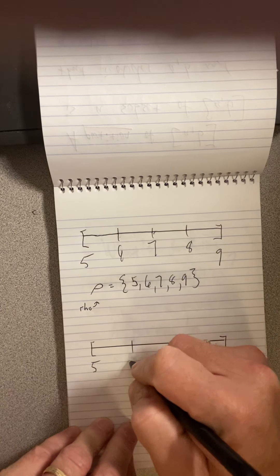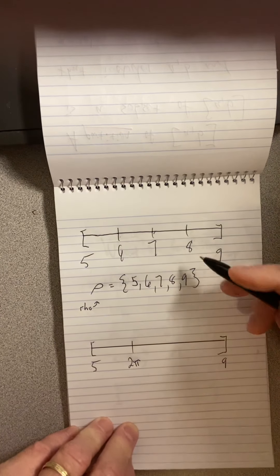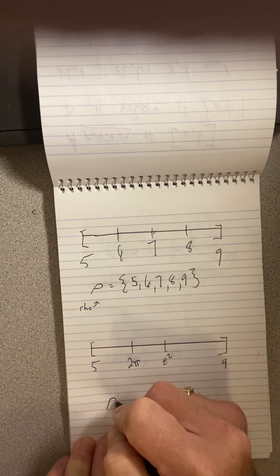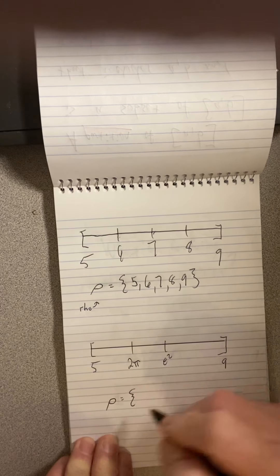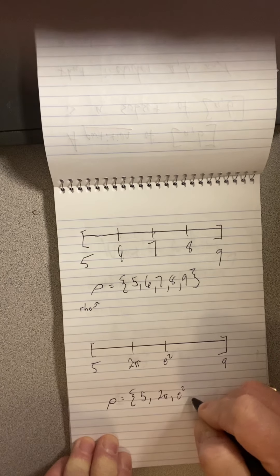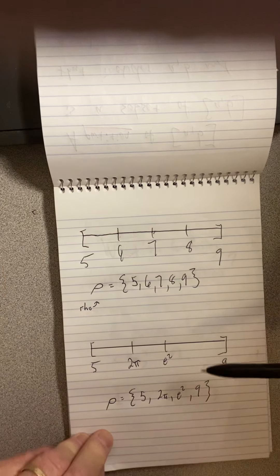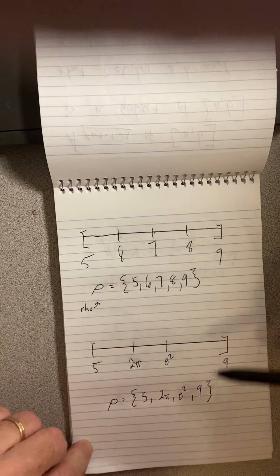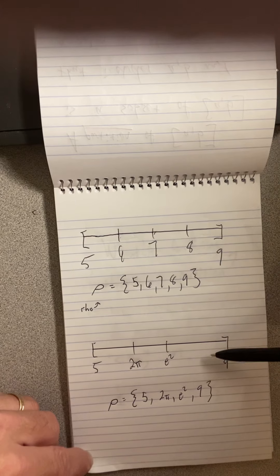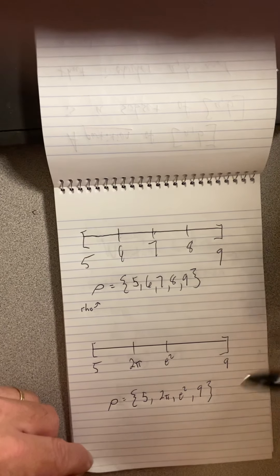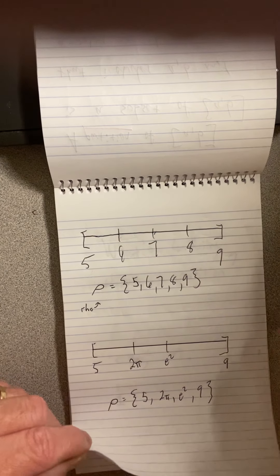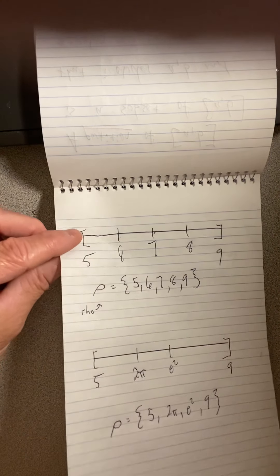I could chop here at 2π, and then I could chop here at e², and then my partition could be 5, 2π, e², and 9. That would be very irregular. For our purposes, this is not too useful, but there could be cases where this would be useful. But we're not going to do any advanced, really hard stuff or anything tricky. So for us, this will be easy. Easier is to just chop it up regularly.